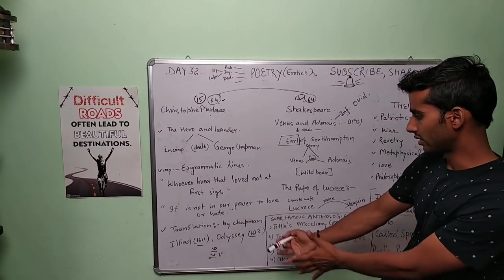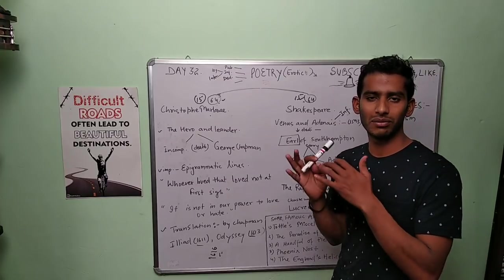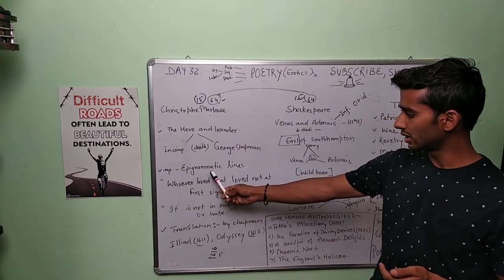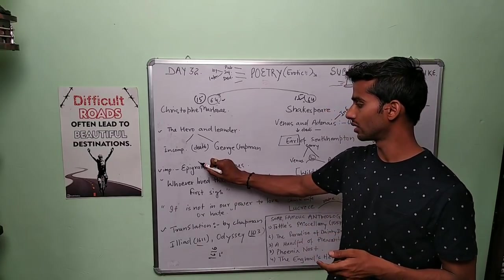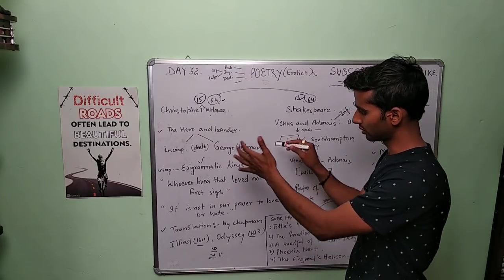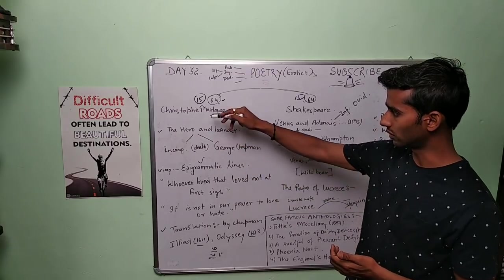So here, incomplete, George Chapman—we have gone through this detail. Very important thing is that he was using epigrammatic lines. You can find this word 'epigrammatic,' and you will find that it is important to understand this work if you are going to talk about Marlowe.